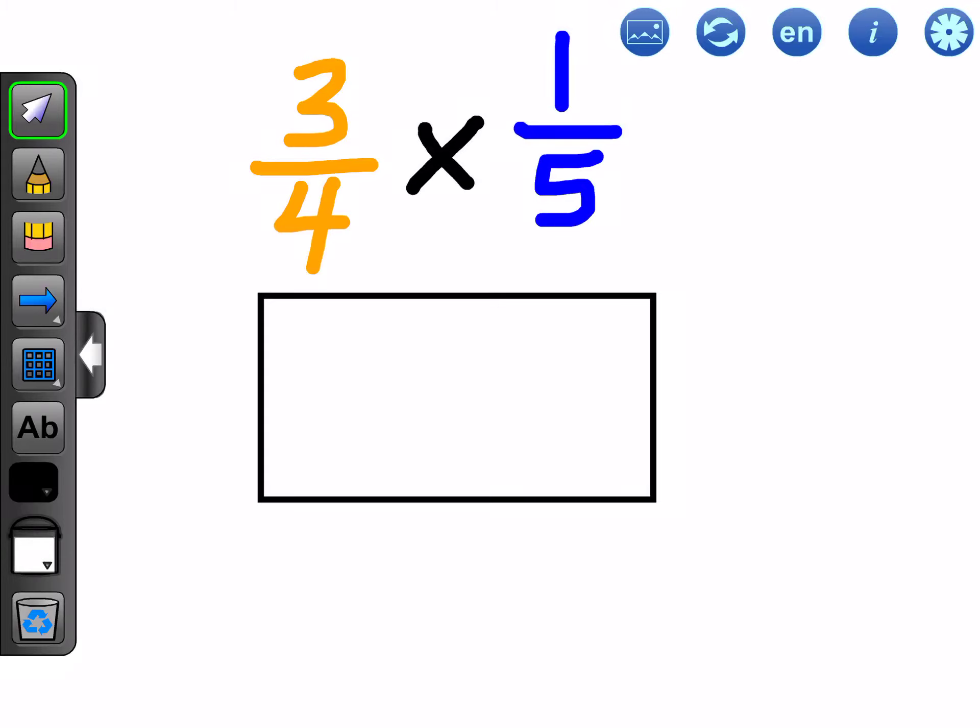Today we're going to look at the multiplication of fractions using an area model. We're looking at three quarters times one fifth. Before we get started, let's remember what this actually means in words. It means we're looking for three quarters of one fifth. So that's a part of a part, so we're looking for something pretty small.